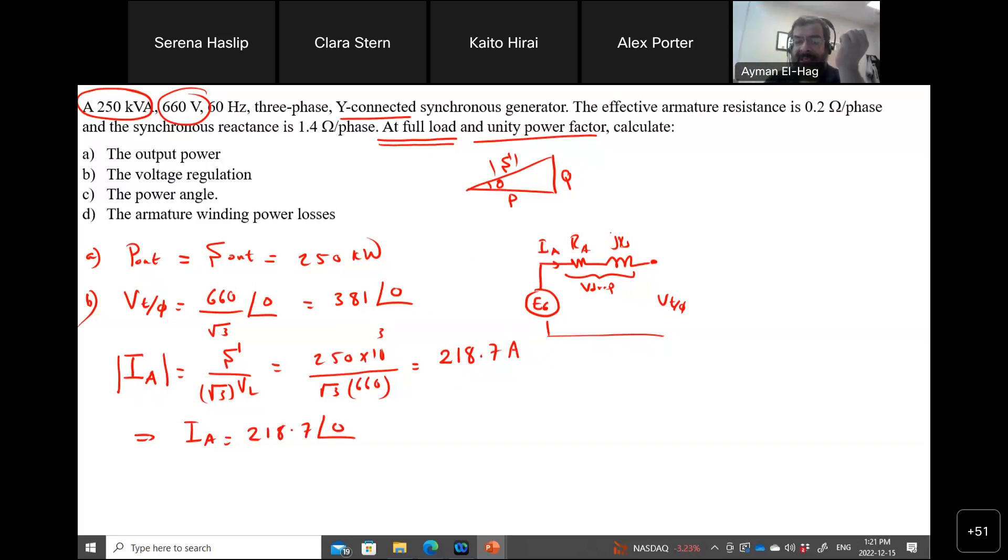so your I_A will equal 218.7 angle of 0, because the power factor angle is the angle difference between the voltage and the current. Since the angle of the voltage is 0, then the current has to have a 0 angle, because there is no phase shift between them, because this is a unity power factor.